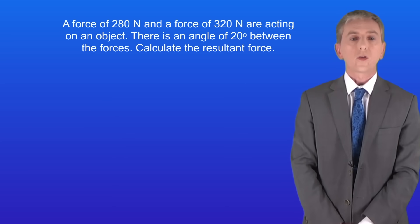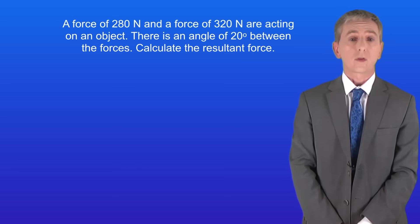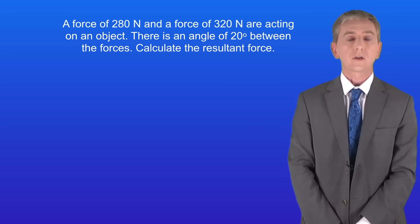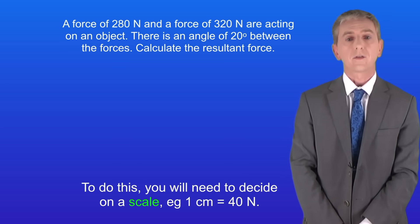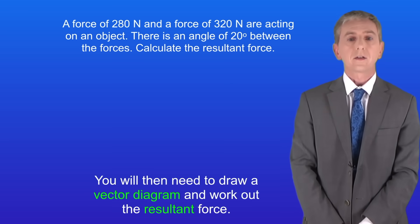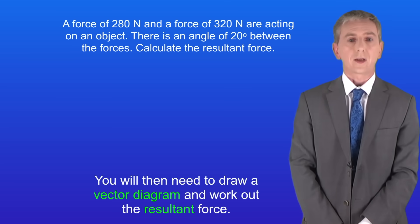Here's one for you to try. A force of 280 newtons and a force of 320 newtons are acting on an object. There's an angle of 20 degrees between the forces. Calculate the resultant force. Now to do this you'll need to decide on a scale, for example 1 centimeter for 40 newtons. You will then need to draw a vector diagram and work out the resultant force. So pause the video now and try this yourself.